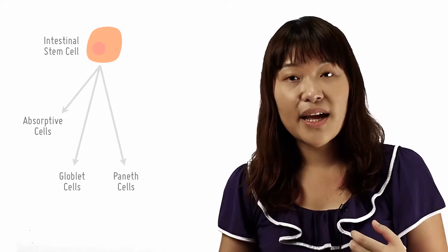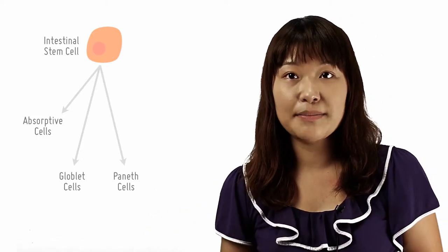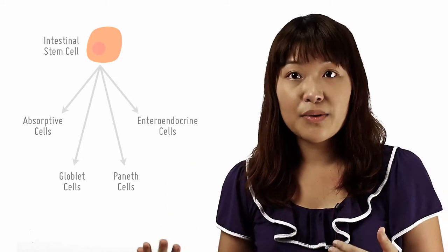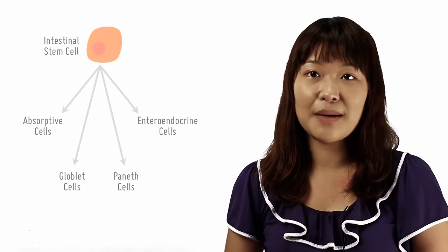Thirdly, they also give rise to Paneth cells which are part of the innate immune system secreting lysozymes. And lastly, they also produce enteroendocrine cells which secrete a whole host of hormones for signaling purposes.